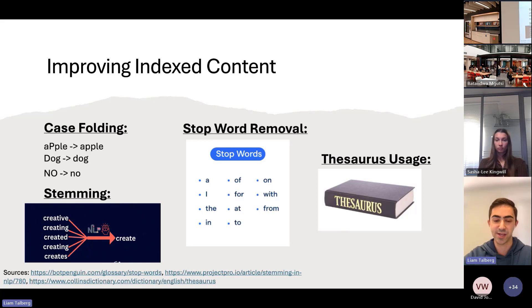The first method is called case folding. With case folding, we simply convert all the text in our scanned information to the same case. This process reduces redundancy and makes our index more uniform. Another important technique is stemming. With stemming, we aim to convert different forms of the word to the same root form. This ensures words with the same meaning that we are indexing are indexed together. An example of this is the word creating or creative being stemmed to the word create.